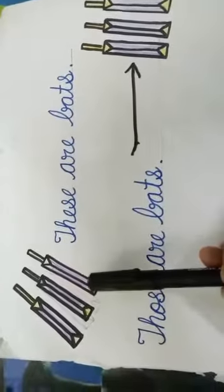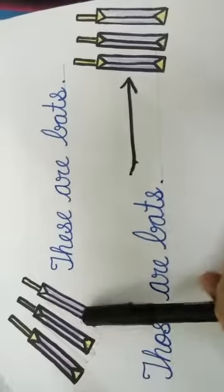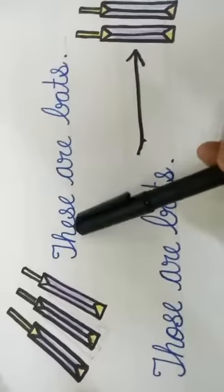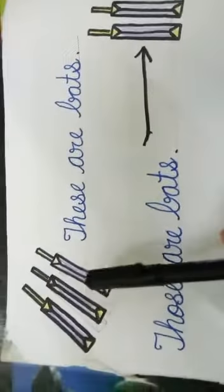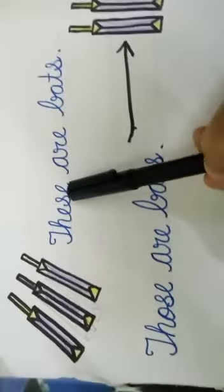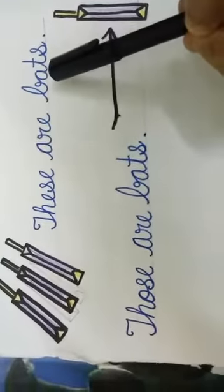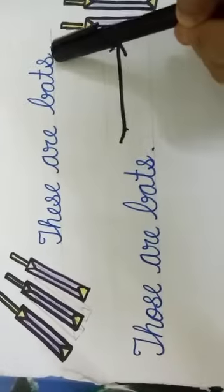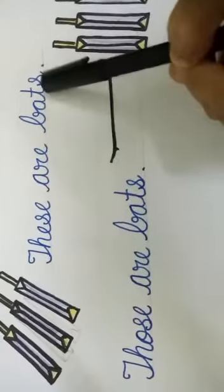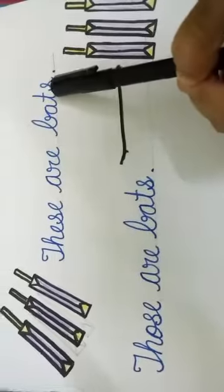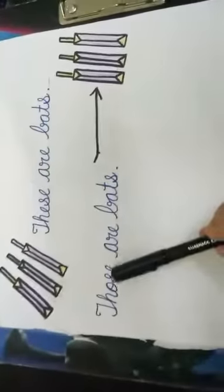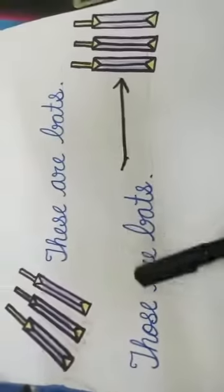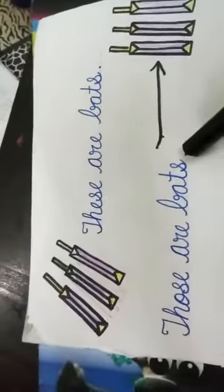So students, for these three bats which are close to me, I will use 'these': These are bats. Jab teen bats hain jo mere paas hain, main unke liye 'these' use karungi — these are bats. Now you can see I have used 'bats', which is the plural. For the three bats which are far in distance — jab ye bats humse door honge, hum unke liye kya use karenge? Those. Those are bats.